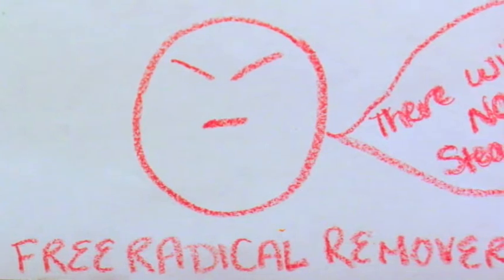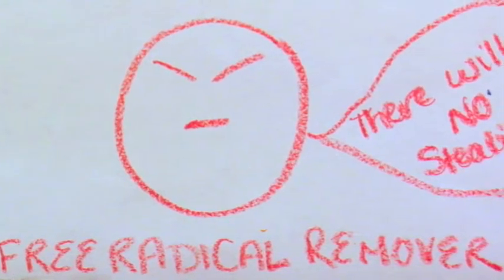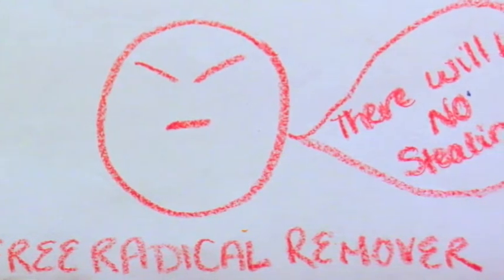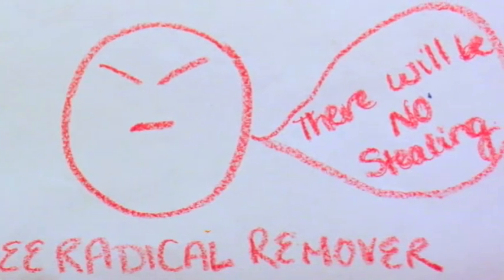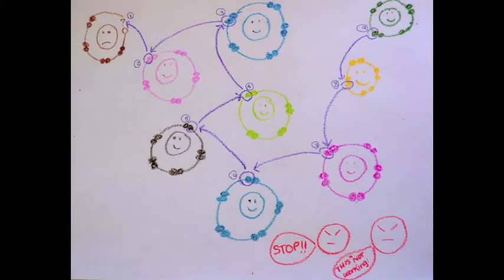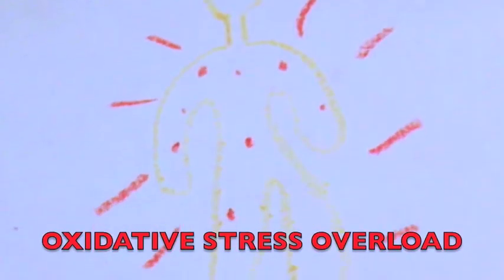Free radicals are produced naturally throughout the body as byproducts of cellular metabolic processes. Therefore, our cells come equipped with molecules to get rid of these free radicals. The problem comes when there is an excess of free radicals and our cells can no longer keep up. This is called oxidative stress load.